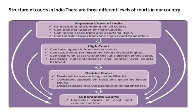Structure of Courts in India. There are three different levels of courts in our country. First is the Supreme Court of India — its decisions are binding on all courts, it can transfer judges of High Courts, move cases from any court to itself, and transfer cases from one High Court to another. Under the High Court: it can hear appeals from lower courts, issue writs for restoring fundamental rights, deal with cases within the state's jurisdiction, and exercises superintendence and control over courts below it. Under the District Court: it deals with cases arising in the district, considers appeals on decisions given by lower courts, and besides cases involving serious criminal offences. Subordinate courts consider cases of civil and criminal nature.